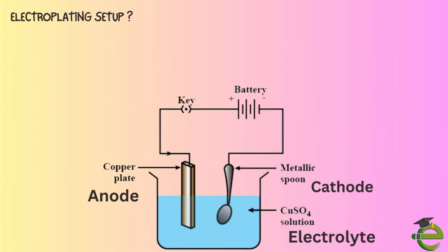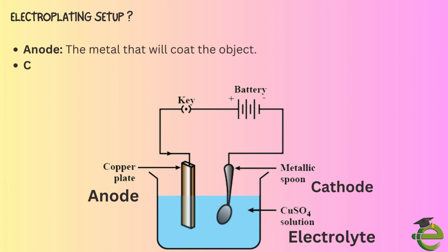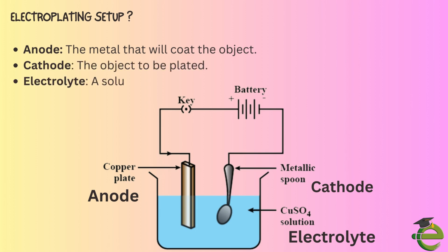Let us see how to set up the apparatus for electroplating. The anode is the metal that will coat the object. The cathode is the object to be plated. The electrolyte is a solution containing metal ions of the plating metal.